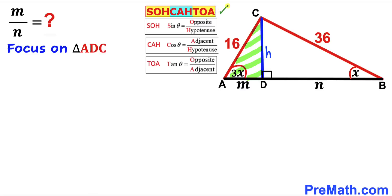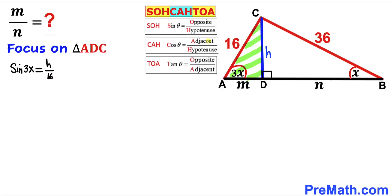Let's recall SOH-CAH-TOA. We are interested in sine of 3x and cosine of 3x. Sine of 3x equals opposite over hypotenuse — in our case that is h divided by 16. Cosine of 3x equals adjacent over hypotenuse — in our case adjacent is m and hypotenuse is 16, so cosine of 3x equals m divided by 16.